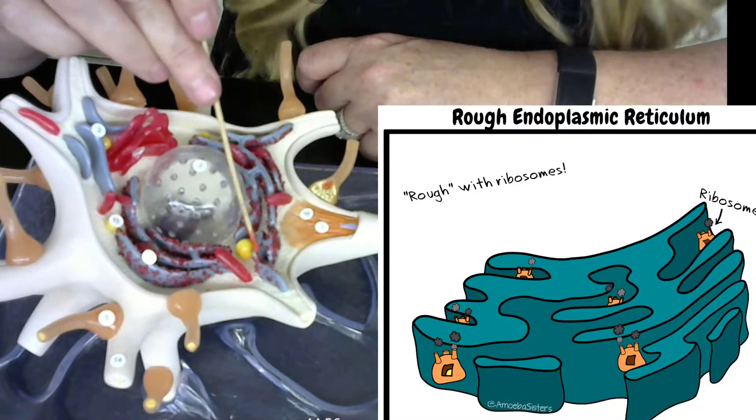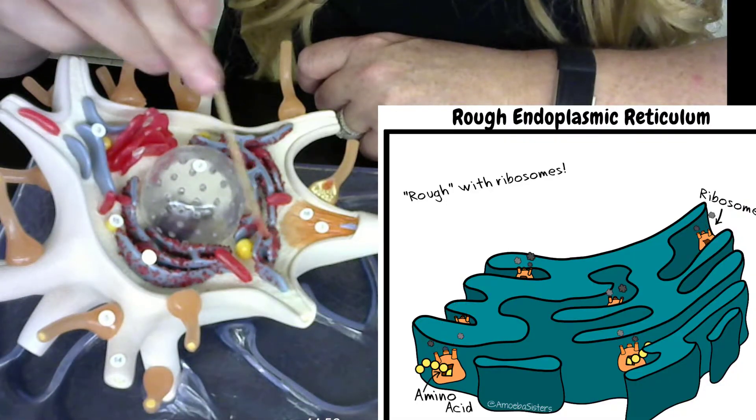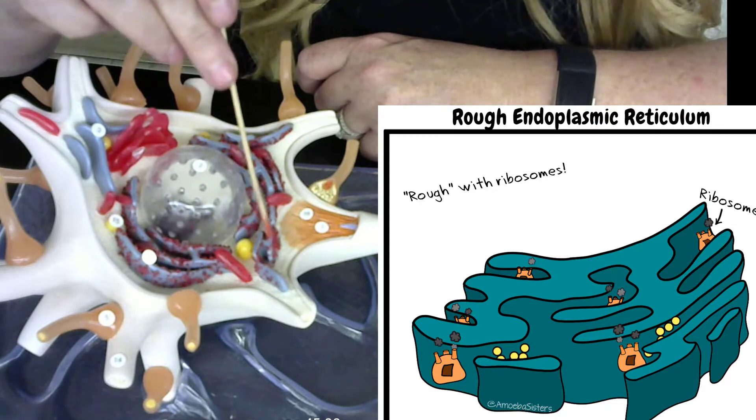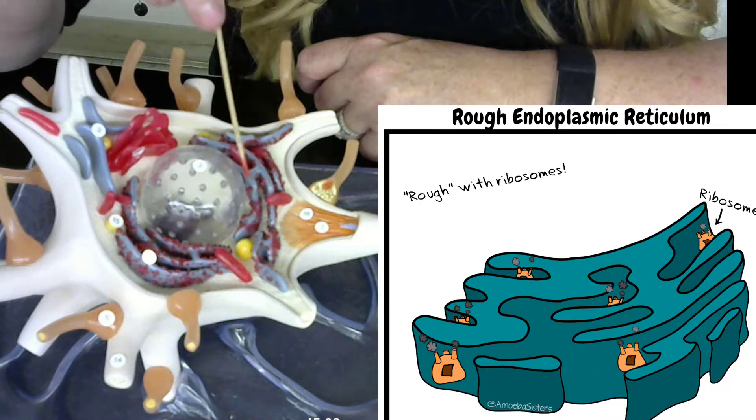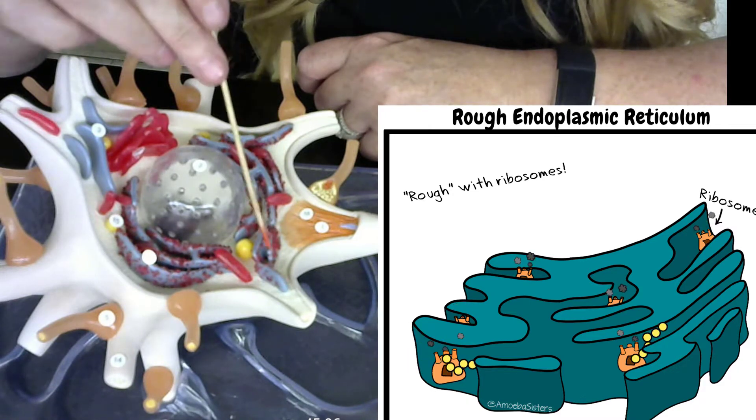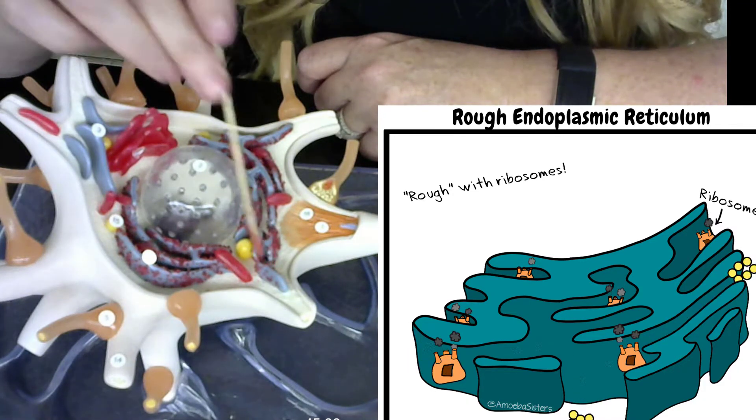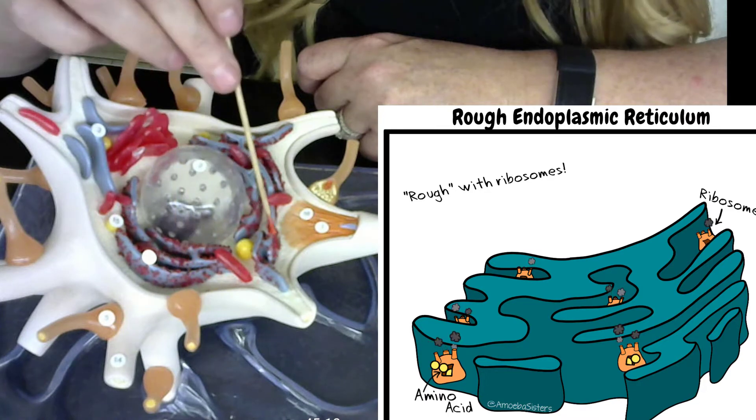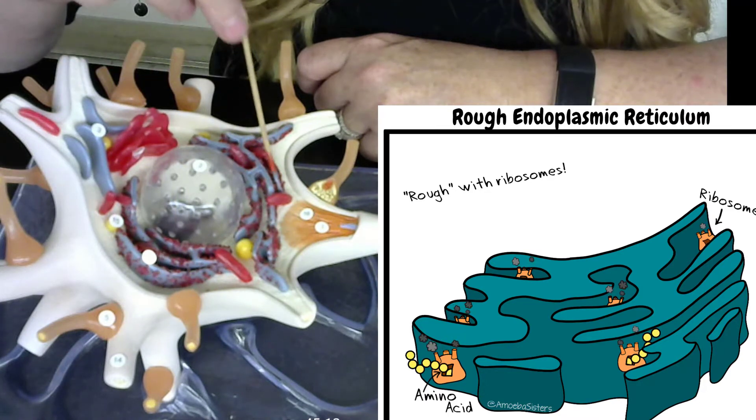I have this gray structure here that has little bumps on it. The gray structure, this is the rough endoplasmic reticulum, and the little bumps that I have on the rough endoplasmic reticulum are the ribosomes.